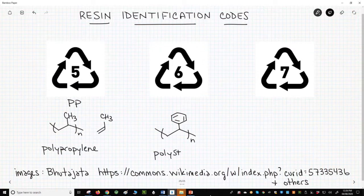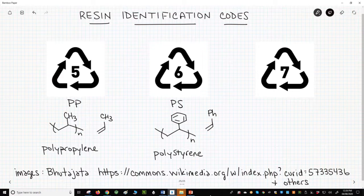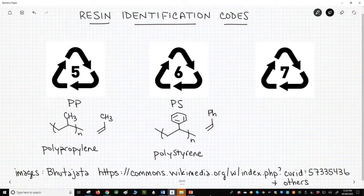Code number 6 is for polystyrene, or PS. Polystyrene is an addition polymer made from styrene. Items like coffee cups, packing peanuts, and plastic utensils are often polystyrene.